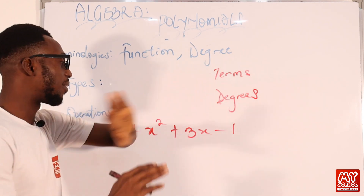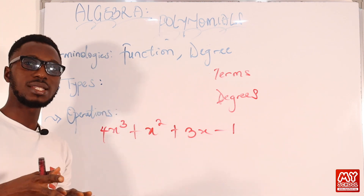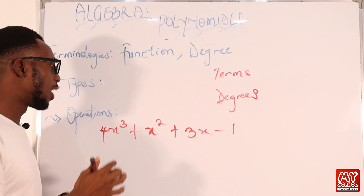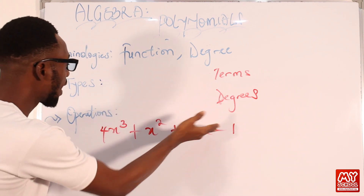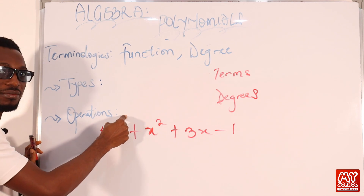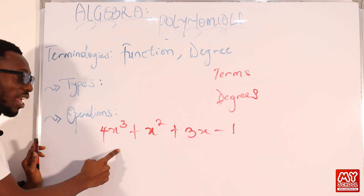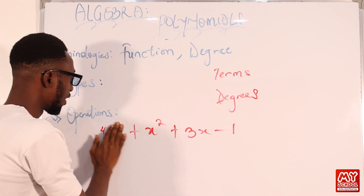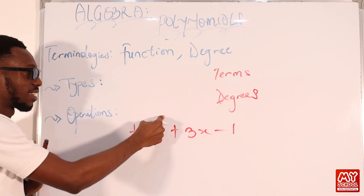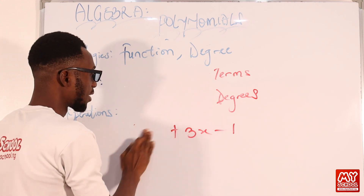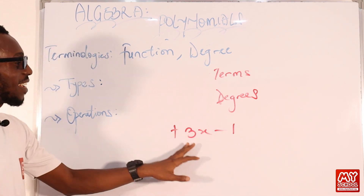Now we can also classify polynomials based on degrees. Degrees refer to the highest power or index of the variable present in the expression. If you look at the expression 4x³ + x², the degree is 3 because that is the highest power. If you remove that term, the degree becomes 2. And if you just have a single-variable term like x, the degree is 1.